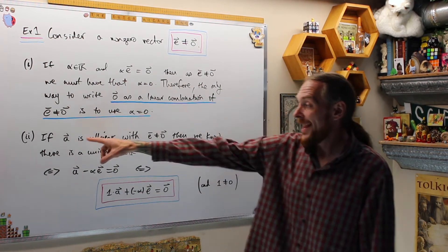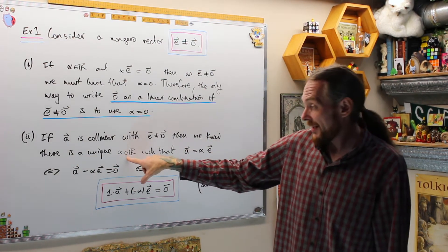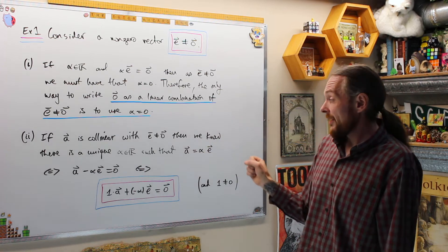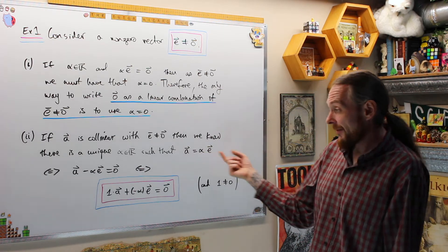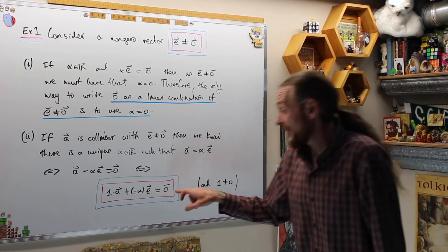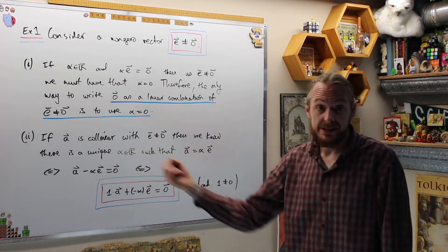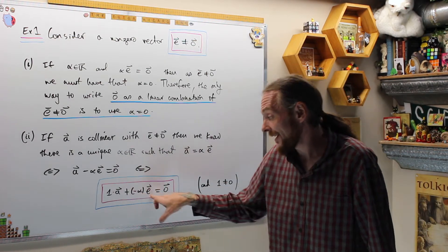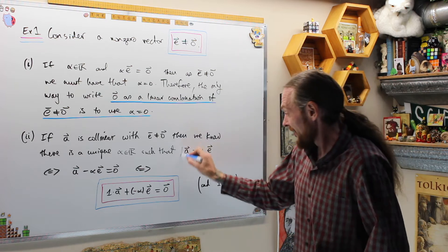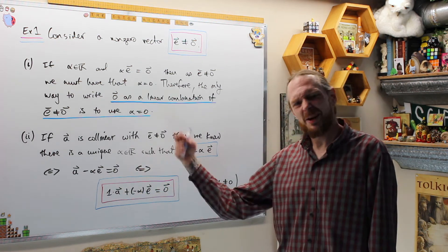Example 2: if I have any other vector a which is collinear with non-zero vector e, then from video 3.3.1 there is a unique α such that a = αe. Because e is non-zero, we can add the negative of αe to both sides and get 1·a + (−α)·e = 0. So zero can be written as a linear combination of a and e, and we can't guarantee that 1 and α are both zero — 1 is definitely not zero — so a and e are linearly dependent.